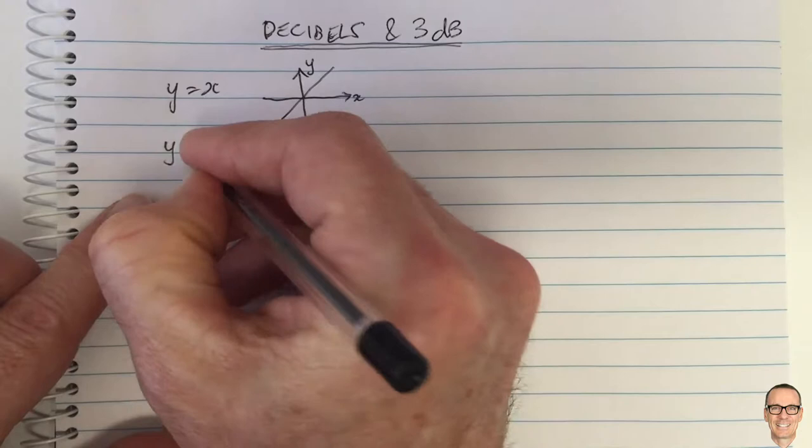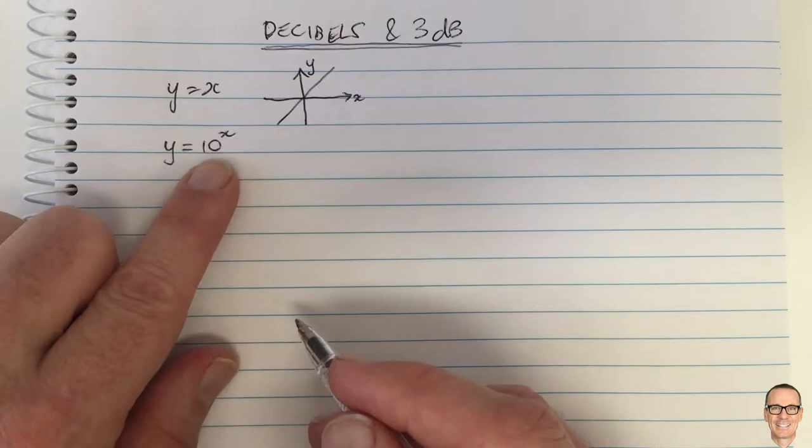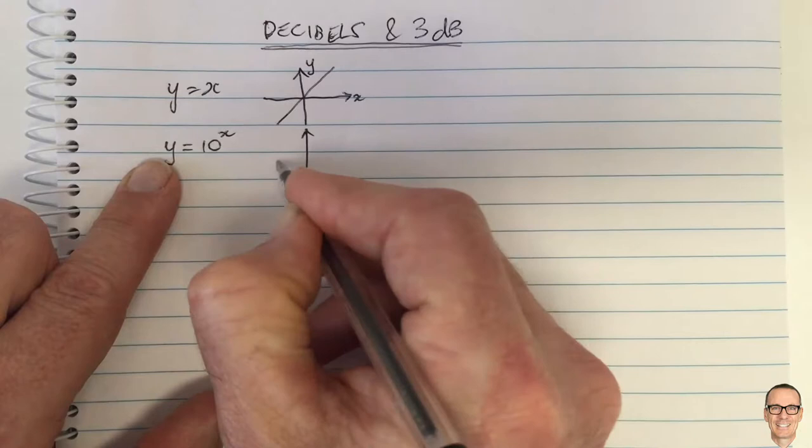What if you had a different relationship where the relationship was a power, like an order of magnitude relationship between the input and the output?